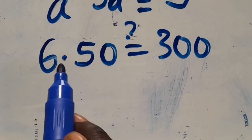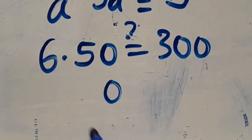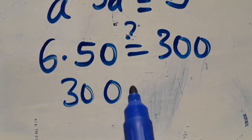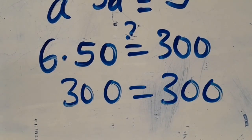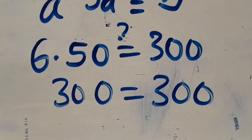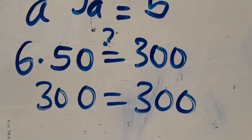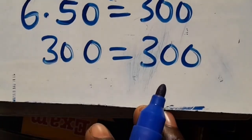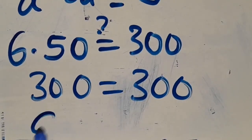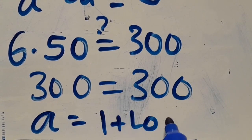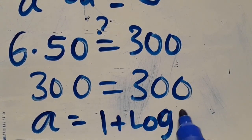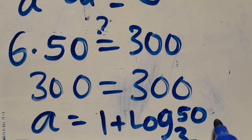So 6 times 50: 6 times 0 gives 0, 6 times 5 gives 30, so this gives 300. Therefore, a equals 1 plus log of 50 in base 3 is correct.